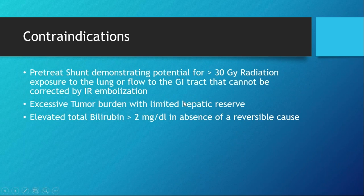Some contraindications relate to the mapping procedure. When injecting Y90 therapy, we worry about shunting to the lungs or non-target embolization. If the mapping process shows potential for greater than 30 Gray radiation exposure to the lungs, or there's significant flow to the GI tract that cannot be corrected by coil embolization of the GDA, we typically avoid Y90. If there's excessive tumor burden with limited hepatic reserve, we avoid Y90 to prevent worsening liver failure. An elevated total bilirubin greater than 2 in the absence of a reversible cause is also typically a contraindication.